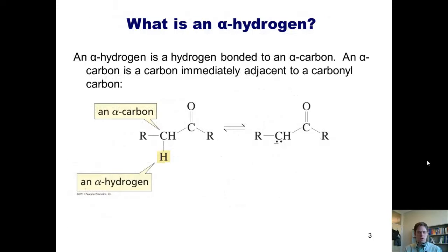Before we go any further, however, I want to introduce you to alpha-hydrogens. What is an alpha-hydrogen, you may ask? Well, an alpha-hydrogen is a hydrogen that's bonded to an alpha-carbon. An alpha-carbon is a carbon that's immediately adjacent to a carbonyl carbon. So you can see that shown pretty clearly in this figure here.